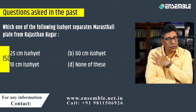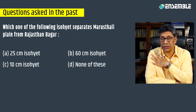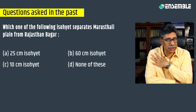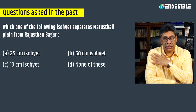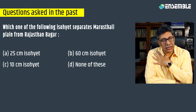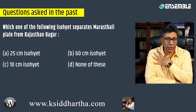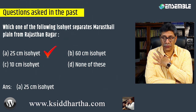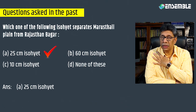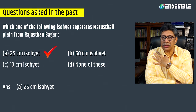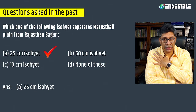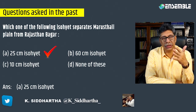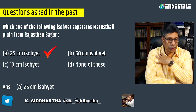The answer options are 25 cm isohyet, 60 cm isohyet, 10 cm isohyet, and none of the above. In this case, the answer cannot be the climatic option alone because Rajasthan Bagar is more of a physiographic feature rather than a climatic feature. But Bagar is going to be separated from Marustari with the help of the 25 cm isohyet, and the amount of rainfall keeps on decreasing towards the west into Marustari proper.